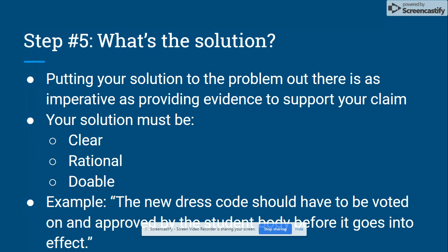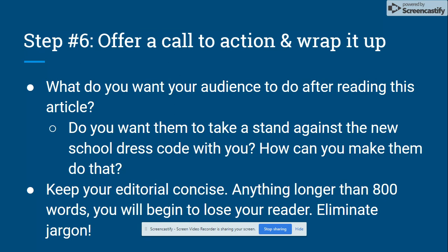Step number five is: what is the solution? You want to put your solution to the problem out there, and that is as imperative as providing evidence to support your claim. Your solution must be clear, rational, and doable — otherwise you're just kind of complaining. My solution to the new dress code would be: the new dress code should have to be voted on and approved by the student body before it goes into effect. Providing a solution is a compelling way to keep your audience interested.